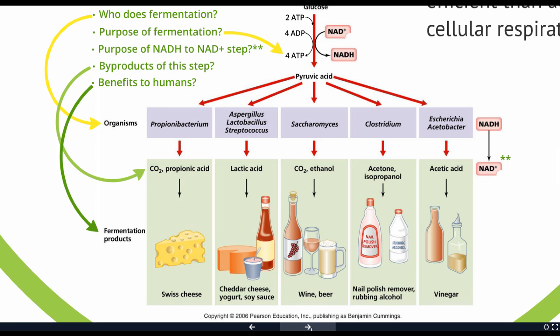Our bodies sometimes do fermentation. When you start working out really hard or running really fast and you get that burn in your muscles, what's happening is your cells aren't getting enough oxygen, and they're switching over to fermentation to at least make a small amount of ATP to get you through what you're doing. The burn is because you're actually producing an acid. That acid breaks down pretty quickly and the burn goes away. Someone who's in really good shape doesn't get that muscle burn, because they are very good at getting oxygen to their cells.